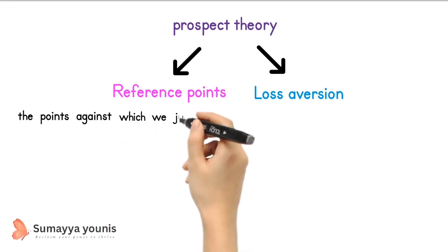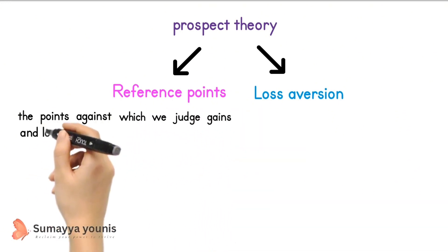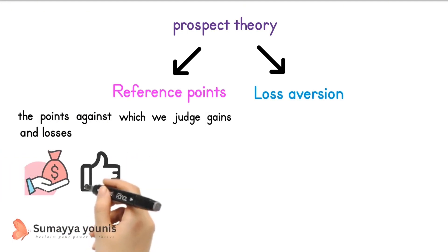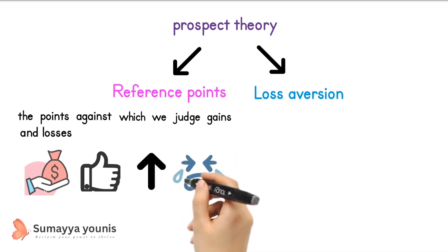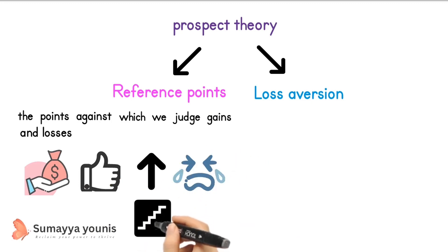Reference points are the points against which we judge gains and losses. For example, if our investment portfolio has been doing well, then our reference point will be high. This means that we will be more likely to feel a loss if our portfolio goes down in value.